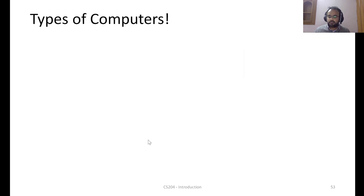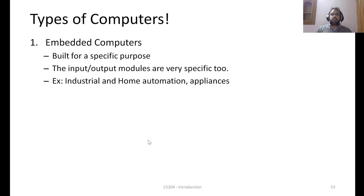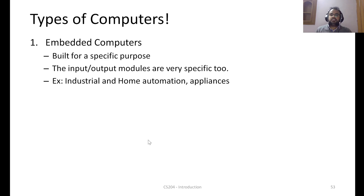Different products have different computing requirements, so we have different types of computers. The first type is embedded computers, built for a very specific purpose — like a washing machine or a circuit breaker — that only needs to react to inputs like temperature or time. Examples include home appliances, home automation, and industrial automation.